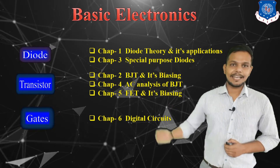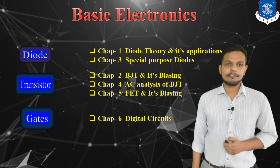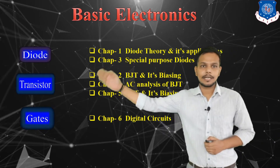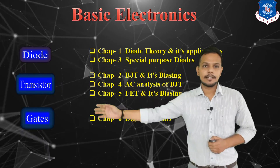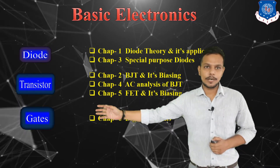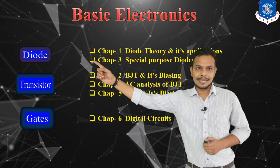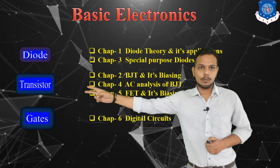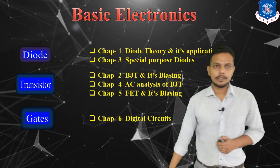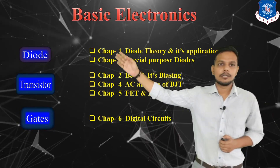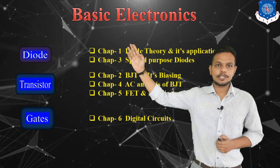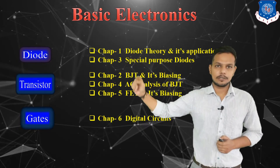Basic electronics chapters are divided according to the components. Here we can see there are three different types of components: one is diode, second one is transistor, and third one is gates. Diode contains two various types of chapters.